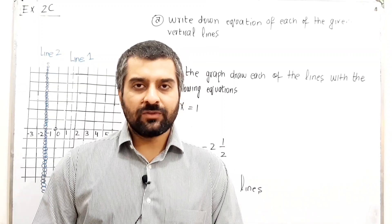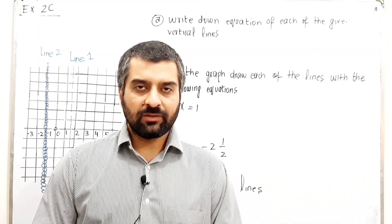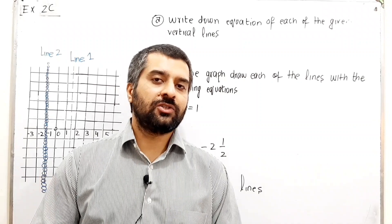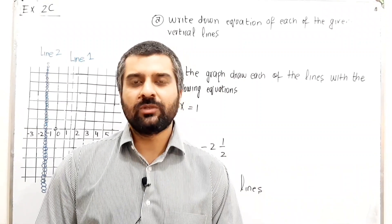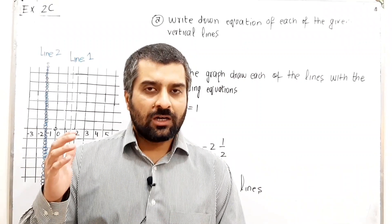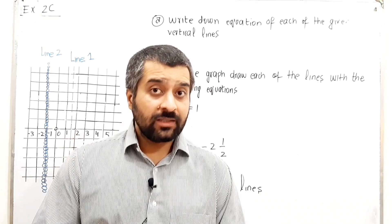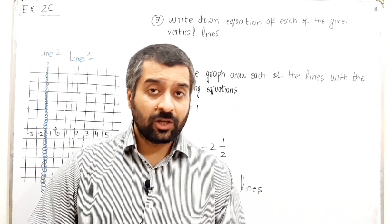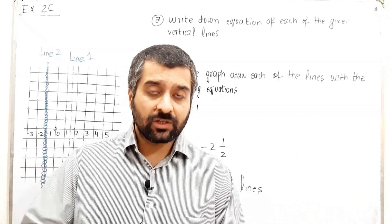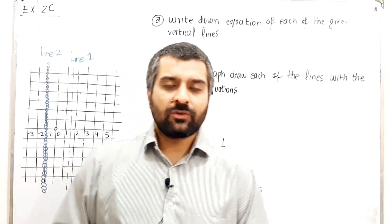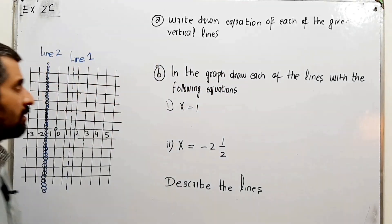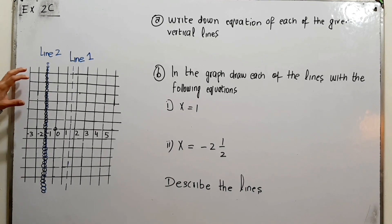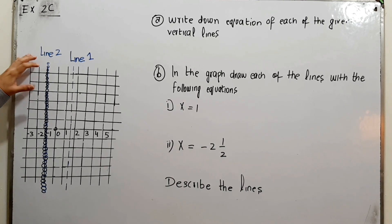This is Exercise 2C of D2 Samath Edition and the topic is gradient of a line. We are going to draw vertical lines as well as describe the equations of the given lines. Starting from question number two — question number one has been solved previously in the last video of Exercise 2C.